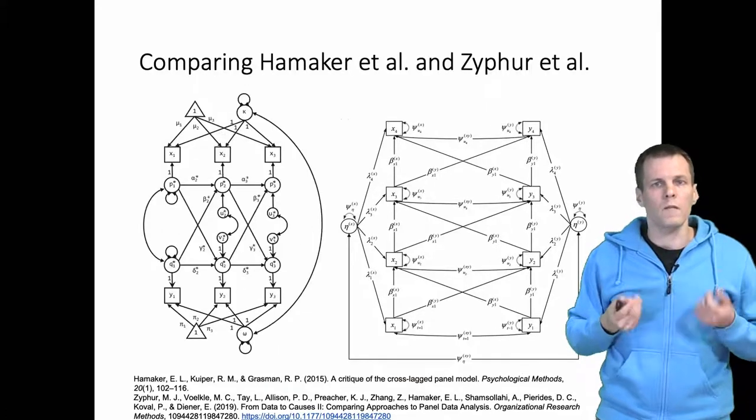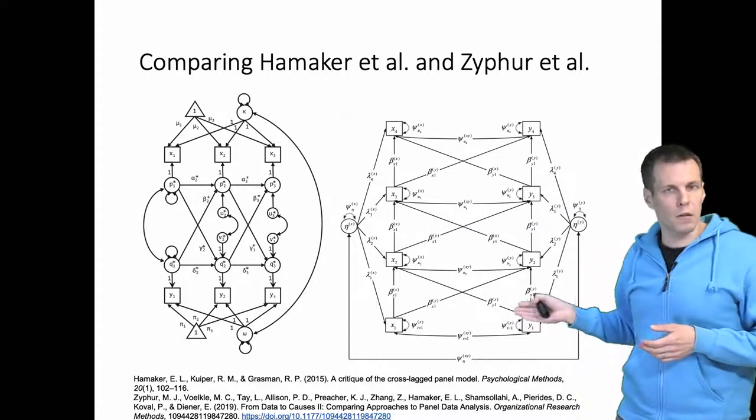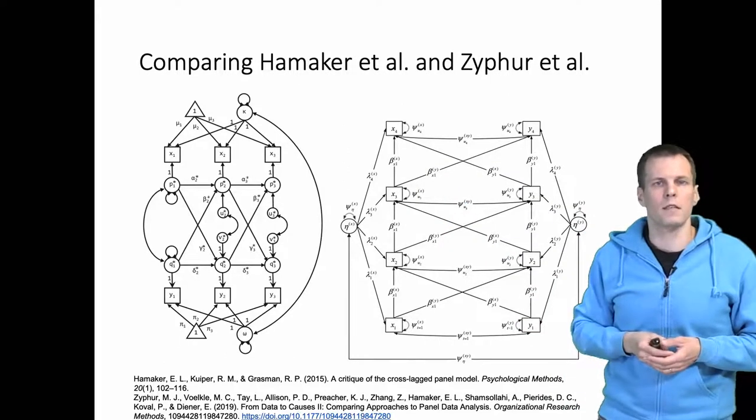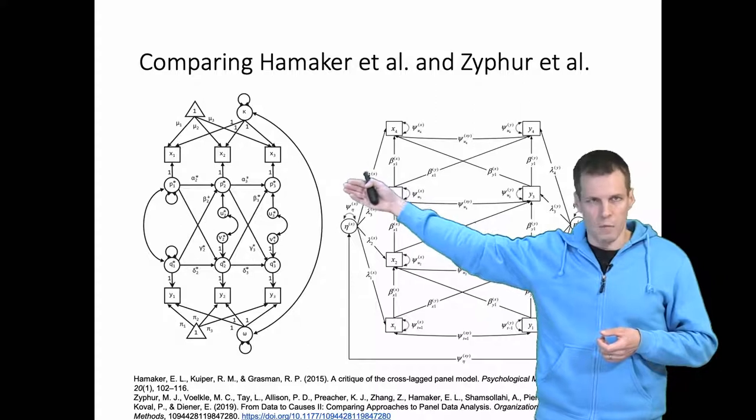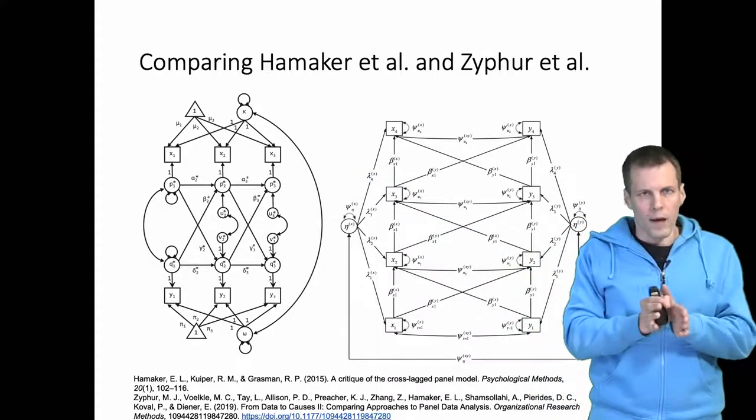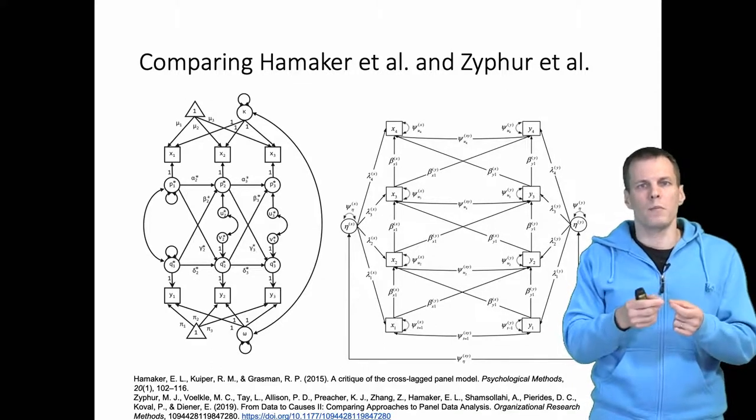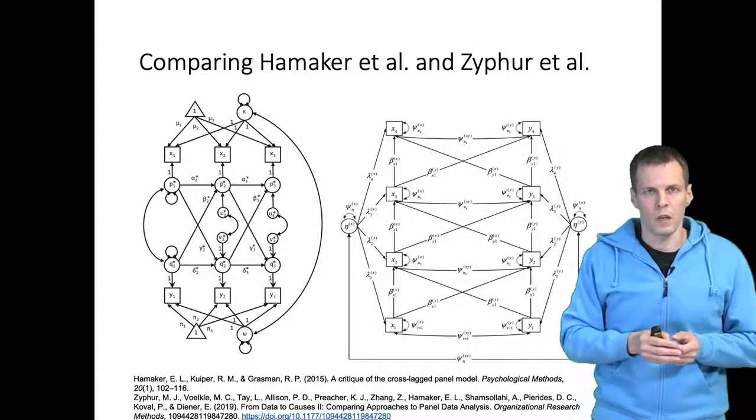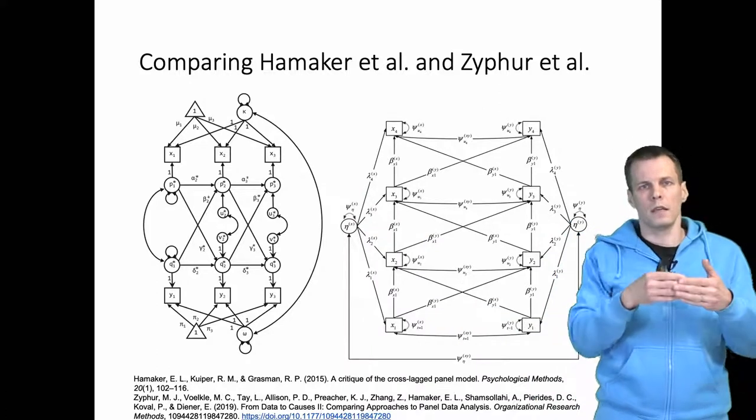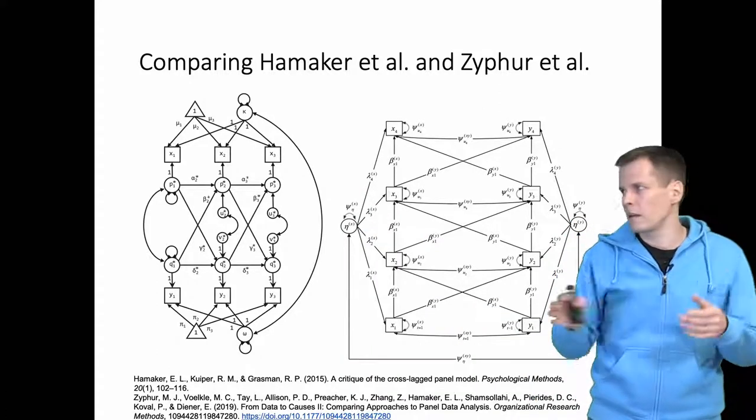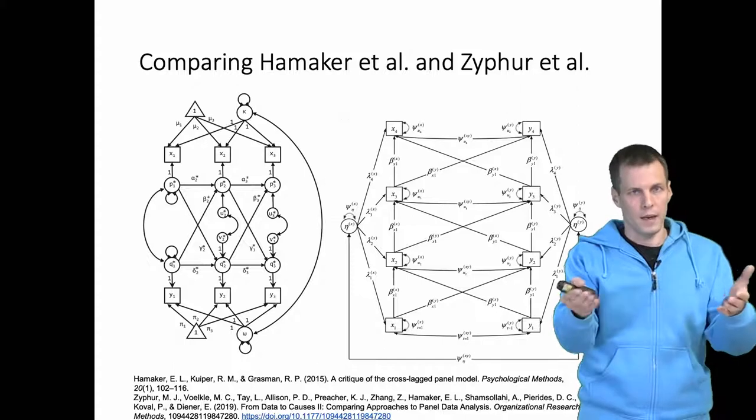Let's take a look at the difference between these models. We'll ignore the means, the triangles, for now. The difference in Hamaker's model is that Hamaker introduces latent variables for each observed variable, and then the path model or the cross-lagged model is specified for those latent variables. The random intercept is specified for the observed variables. What Hamaker's model basically does is that it models mean differences independently of these effects. It centers the data within cluster and then estimates the cross-lagged panel model.